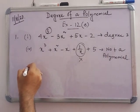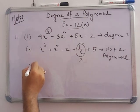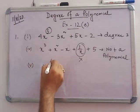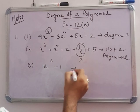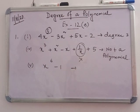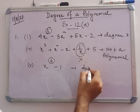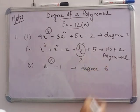In number 5: x to the power 6 minus 1. The highest power is 6, so the degree is 6.